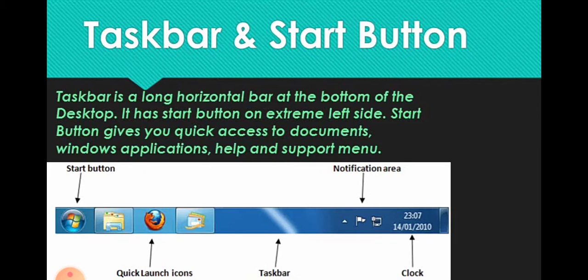The taskbar is a long horizontal bar at the bottom of the desktop. It has a start button on the extreme left side. The start button gives you access to documents, Windows applications, help, and the shortcut menu.